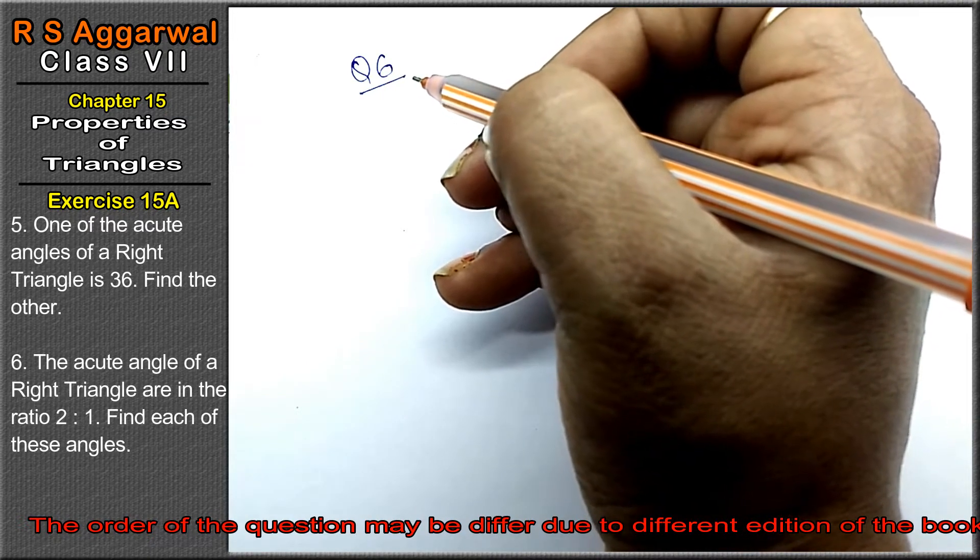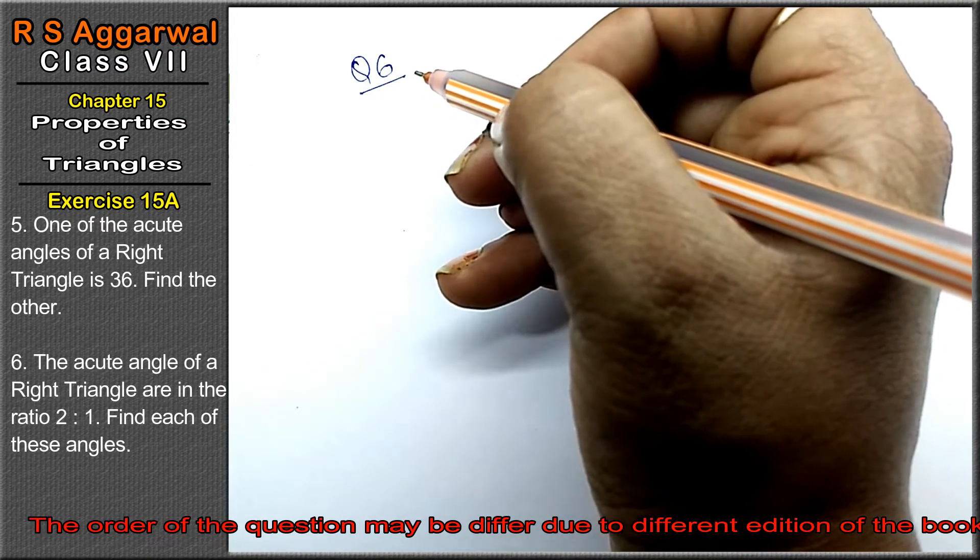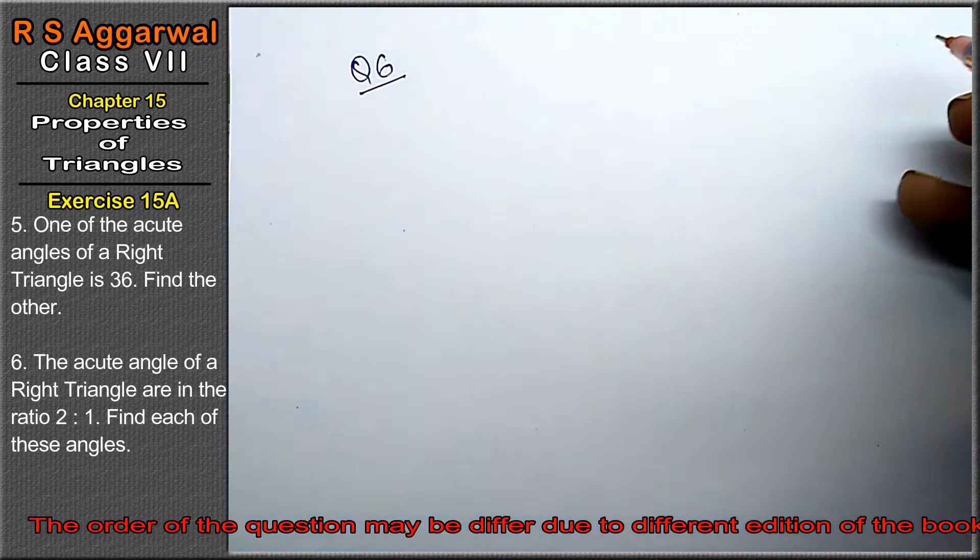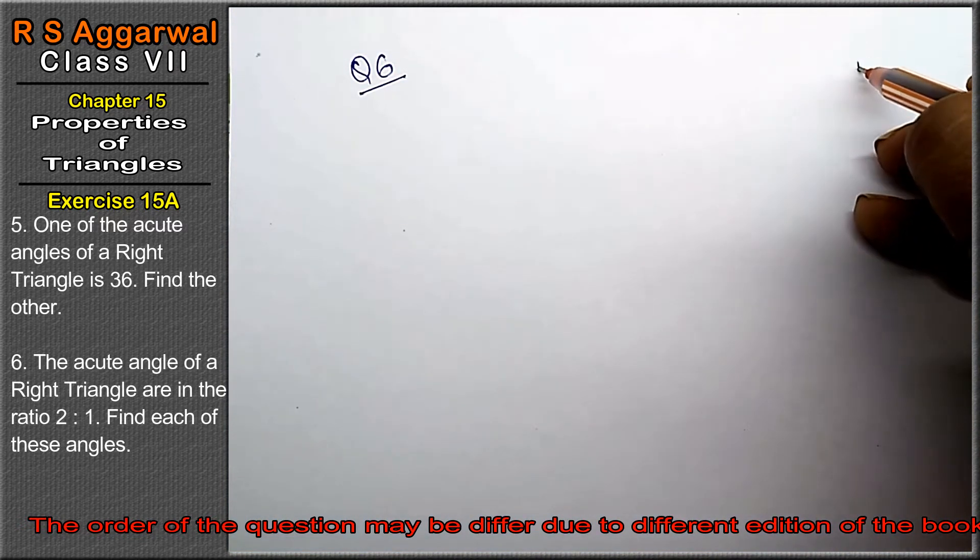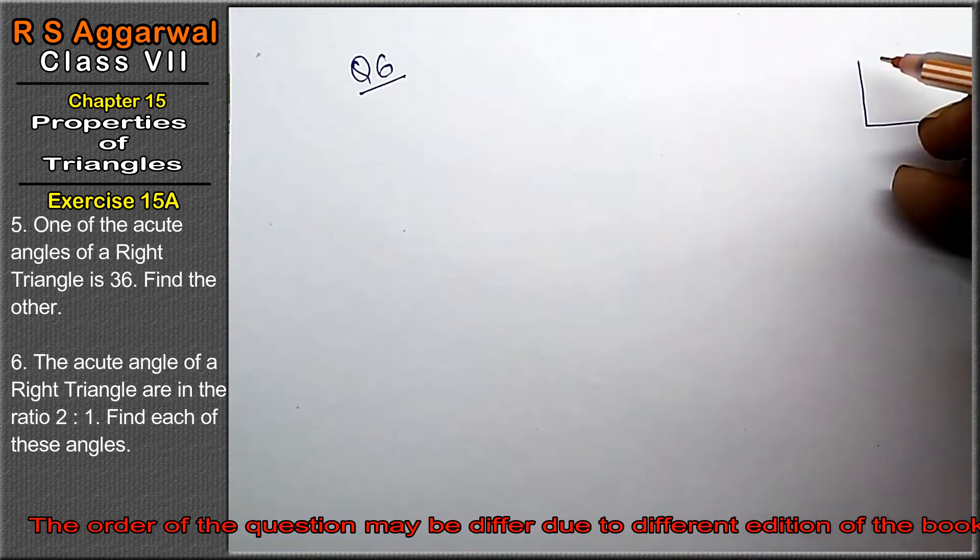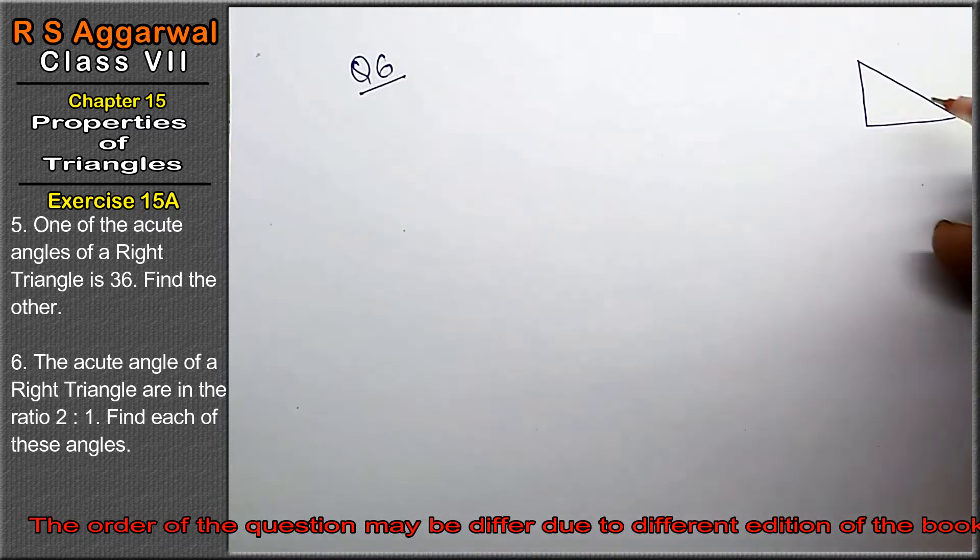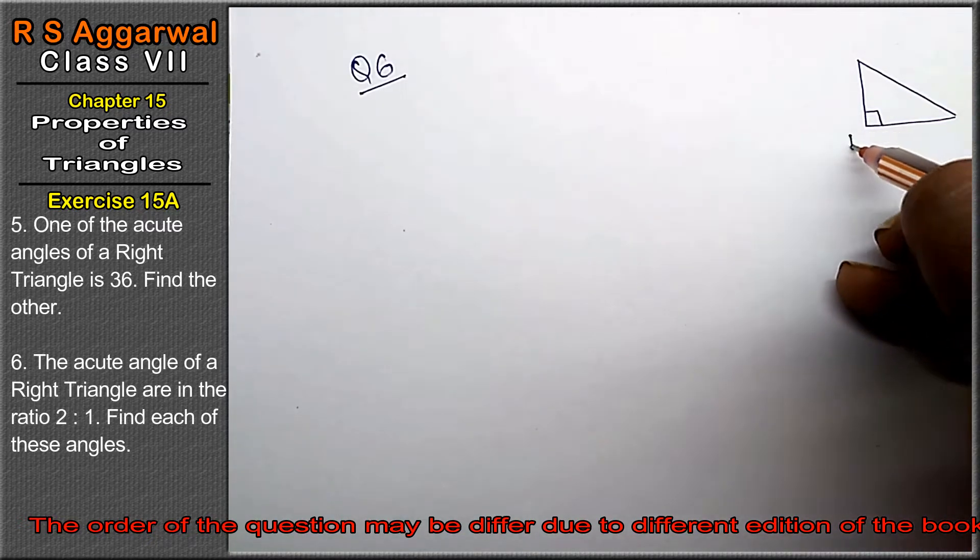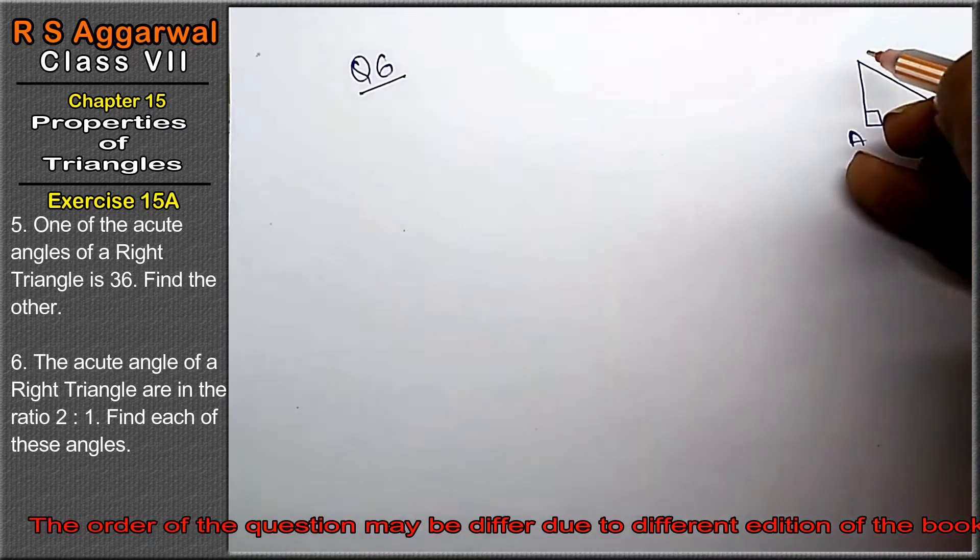Question number 6: the acute angles of a right angle triangle are in a ratio. What is a right angle triangle? It has a 90 degree angle. I will name the angles A, B, C.